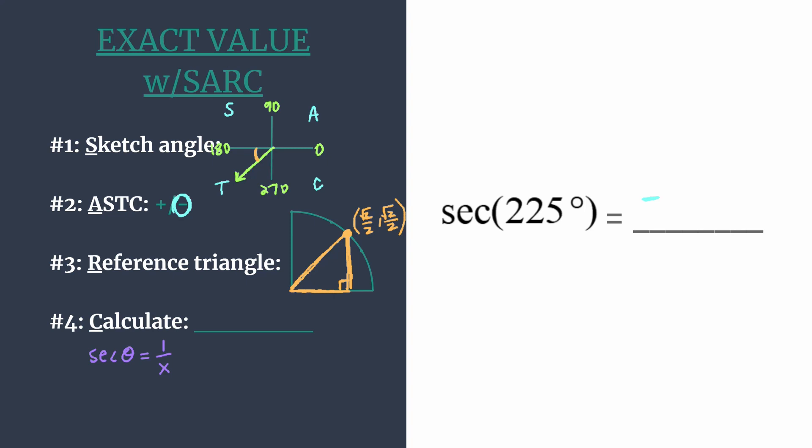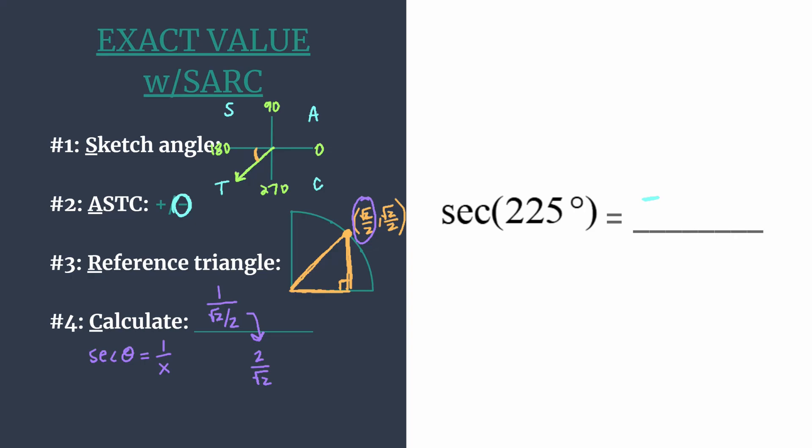Well our x is square root of 2 over 2. So we have 1 over square root of 2 over 2, and we just need to do a little bit of work here to simplify. 1 divided by a fraction just ends up giving you the reciprocal of that fraction in the denominator. Of course we can't have a radical in the denominator, so we need to rationalize. Multiply by root 2 over root 2.